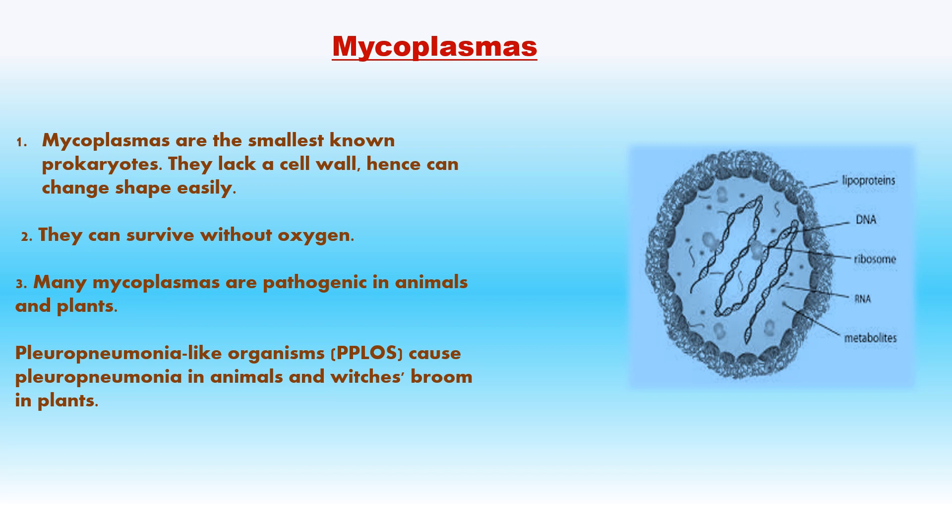Mycoplasmas are the smallest known prokaryotes. They lack a cell wall, hence can change shape easily. They can survive without oxygen. Many mycoplasmas are pathogenic in animals and plants. Pleuropneumonia-like organisms (PLOs) cause pleuropneumonia in animals and witches' broom in plants.